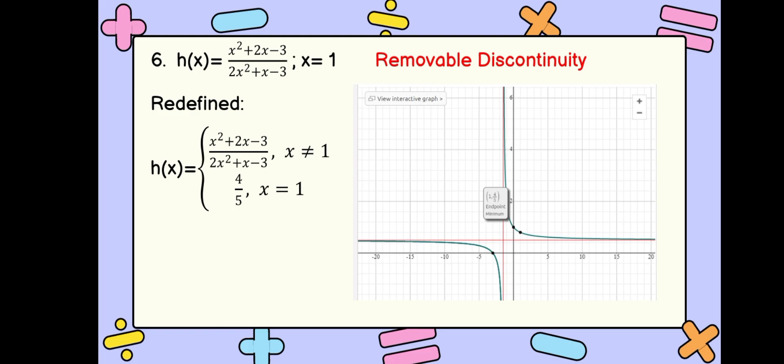Since our function is removable discontinuity, if we want our function to be continuous, we need to redefine it. We have a piecewise function: h of x equals x squared plus 2x minus 3 over 2x squared plus x minus 3 if x is not equal to 1, and h of x equals 4 over 5 if x equals 1. Our function will now be continuous.